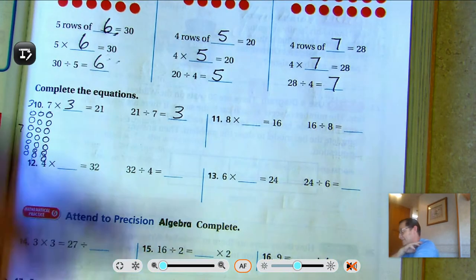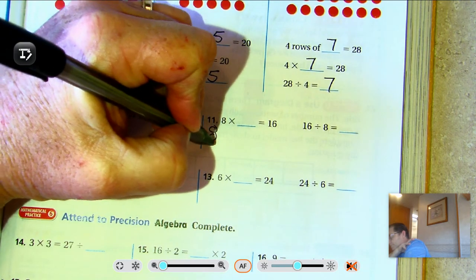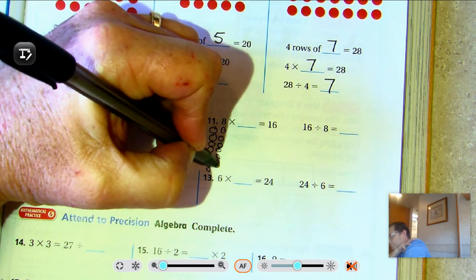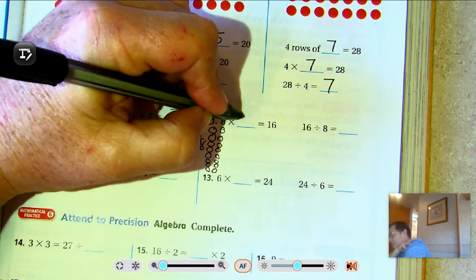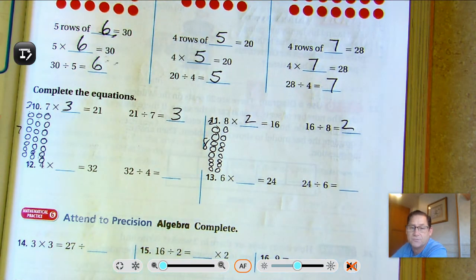Eight times what is 16? Eight times two is 16. So 16 divided by two is eight.